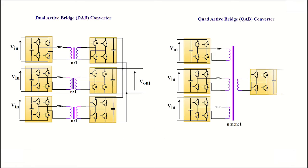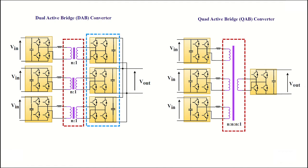In the QAB converter, four H-bridges are coupled to a single core. Therefore, the number of transformers is decreased by one-third. Also, the number of converters and capacitors are reduced resulting in high power density.